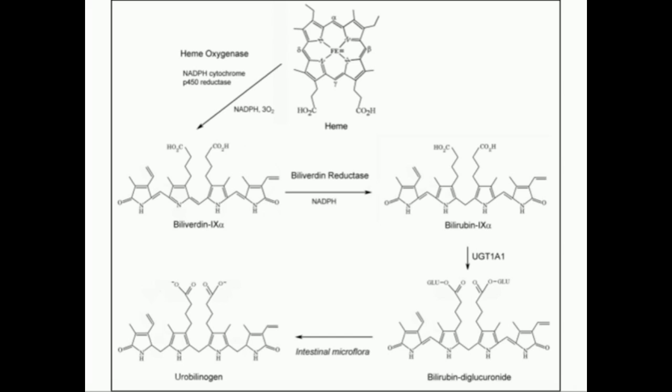Heme oxygenase is interesting for a number of reasons. Number one, it itself is a P450. Heme oxygenase, the enzyme that degrades heme, is itself a P450, which means it uses heme. In other words, it's using heme to break open heme. On top of that, it also removes the iron from the heme. Notice in biliverdin you don't see the iron. That's because the iron is removed by heme oxygenase.